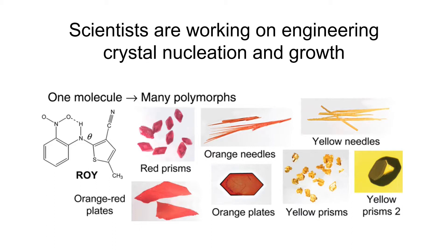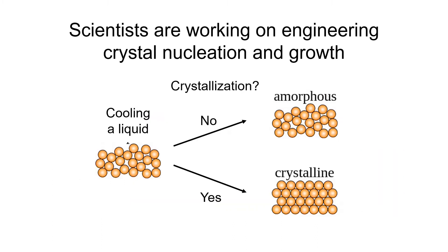Moreover, different conditions of nucleation and growth can generate different crystal structures. Here is an example of this small molecule — starting from the same molecule, there can be crystal structures with different sizes, different shapes, and different colors. That's why it's called ROY: red, orange, and yellow. In pharmaceutics, we pay a lot of attention to crystal structures, because different structures have different properties, including mechanical properties, dissolution performance, and final absorption into the body.